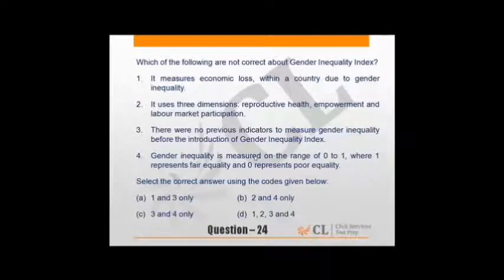Which are not correct about gender inequality index? It measures economic loss within a country due to gender inequality - of course it measures economic loss, so correct. It uses three dimensions: reproductive health, empowerment and labor market participation - correct. Remember and by-heart these three. So one and two are correct, we know three and four are wrong. There are no previous indicators - there have been many: Gender Development Index, Gender Empowerment Index. Gender inequality is measured 0 to 1 where 1 represents fair equality and 0 poor equality - rather, it's given wrong. 0 means 0% inequality, 1 means 100% inequality. So 3 and 4 stand incorrect. Remember, the question asks what is not correct.